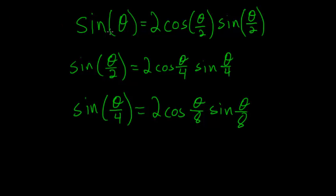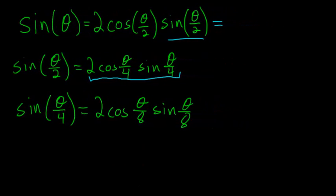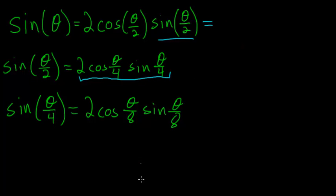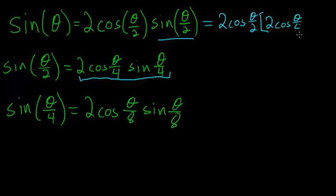If we look back at the original equation, we have the sine of theta over 2, but we just solved for what the sine of theta over 2 is. We can substitute that in, so the sine of theta is equal to twice the cosine of theta over 2 multiplied by twice the cosine of theta over 4 times the sine of theta over 4.